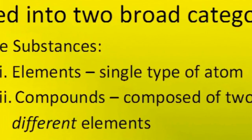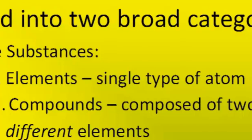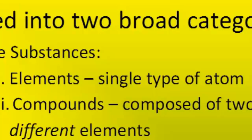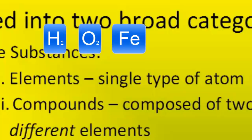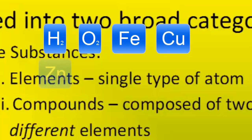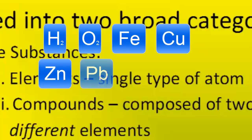Elements and compounds are pure substances. Elements are solids, liquids, and gases that are composed of a single type of atom. Examples of elements are hydrogen gas, oxygen gas, pure iron, copper, zinc, lead, nitrogen gas, and liquid mercury.